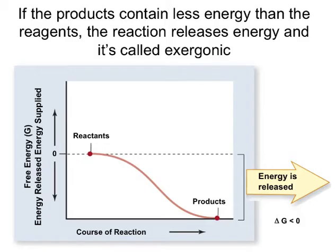On the other hand, if the products have less free energy than the reactants, that means energy is released during the reaction. This is an exergonic reaction — it has a negative change in delta G. Energy is released, and the products have less energy than the reactants.